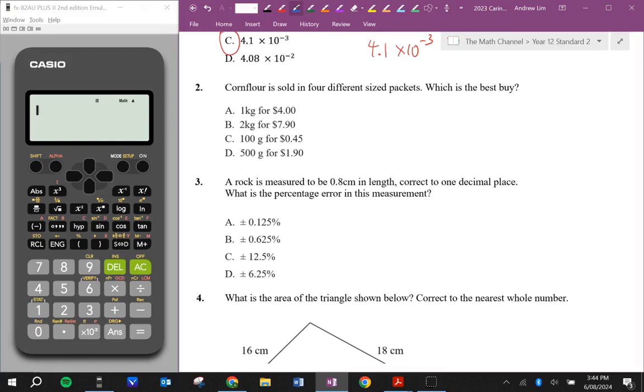Cornflour is sold in four different sized packets, which is the best buy. So I'm just going to make them all 1kg. $7.90 divided by 2 will give us $3.95 per kilo. This one I'll times by 10, give me $4.50 per kilo. And this one I'll double it as $3.80 per kilo. So this one is the cheapest.